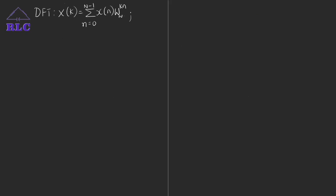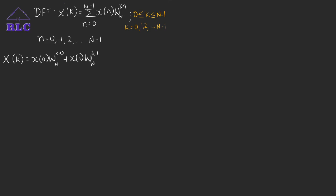Let's consider the DFT equation where k ranges from 0 to N-1. Expanding the DFT equation for n equal to 0, 1, 2, up to N-1, we get X[k] equal to x[0] into W_N power k·0, plus x[1] into W_N power k·1, and so on. The last value will be x[N-1] into W_N power k·(N-1). Let this be equation 1, where k also ranges from 0 to N-1.